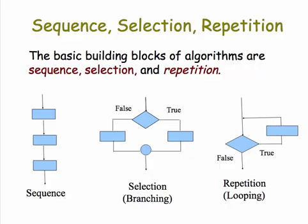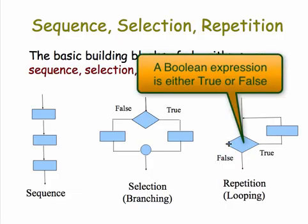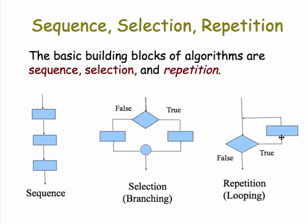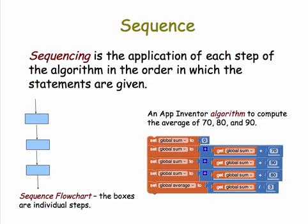The third building block is known as repetition. It's also based on a Boolean condition, meaning a condition that could be true or false. If it's true, we do this statement or statements and we go back and check the condition. And we keep doing that, keep looping back as long as the condition is true. When the condition becomes false, we're finished with our looping and we can continue on that way.